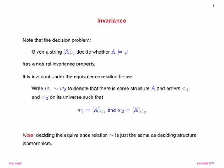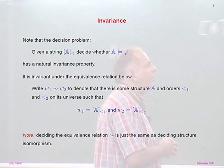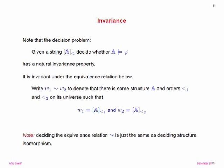This equivalence relation is itself the structure isomorphism problem: two strings are equivalent if they represent isomorphic structures. In particular, this is equivalent to the graph isomorphism problem, whose complexity is the subject of much study. It's not known to be in polynomial time. It's in NP, but not believed to be NP-complete — it's one of these intermediate problems whose status is really not fixed.